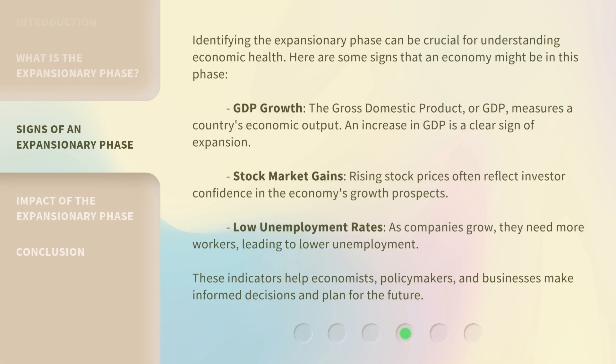Identifying the expansionary phase can be crucial for understanding economic health. Here are some signs that an economy might be in this phase. GDP growth: the gross domestic product, or GDP, measures a country's economic output, and an increase in GDP is a clear sign of expansion. Stock market gains: rising stock prices often reflect investor confidence in the economy's growth prospects. Low unemployment rates: as companies grow, they need more workers, leading to lower unemployment. These indicators help economists, policymakers, and businesses make informed decisions and plan for the future.